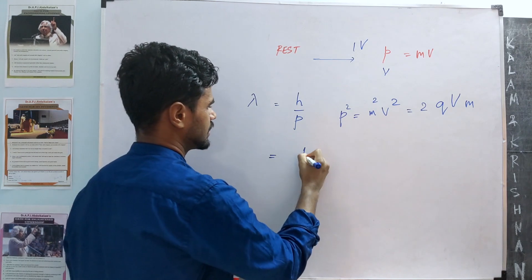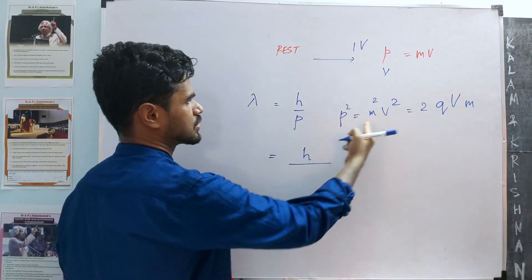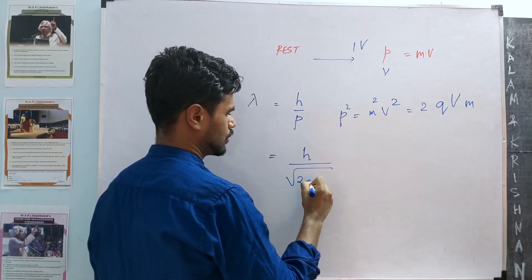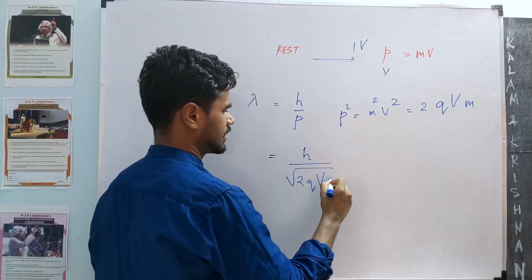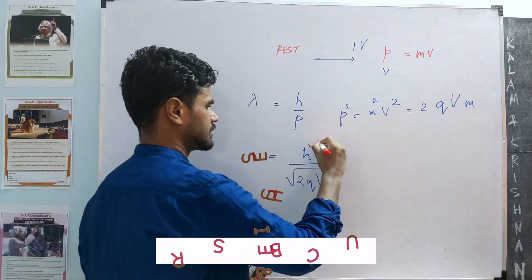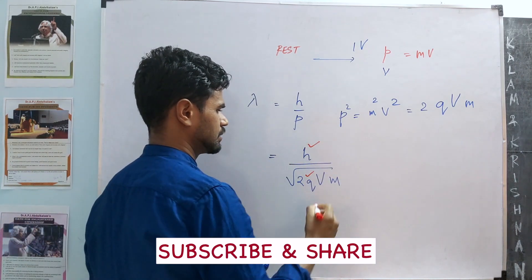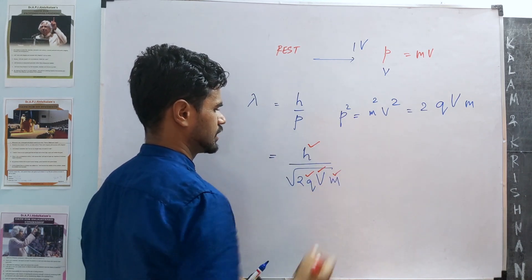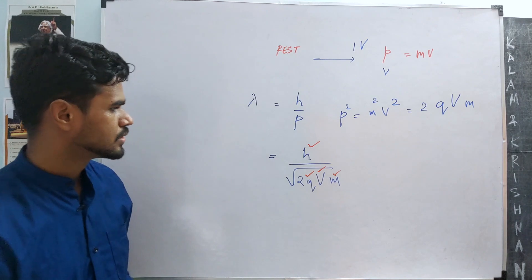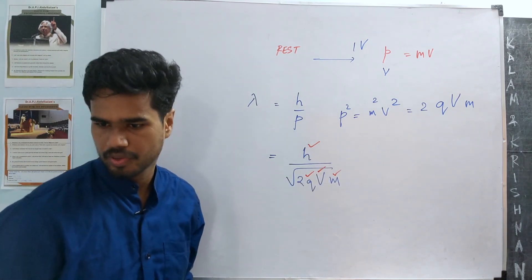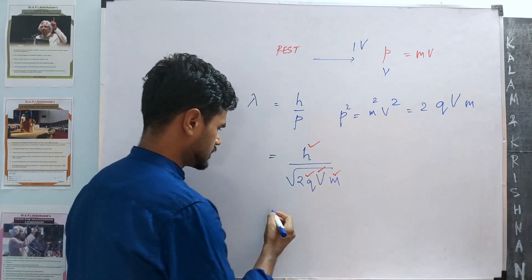So the wavelength we are looking for is h by P, which is the square root of this term over here, which is 2qVm. Planck's constant is given, we know the charge of electron, potential is 1 volt, and the mass of electron is also given.